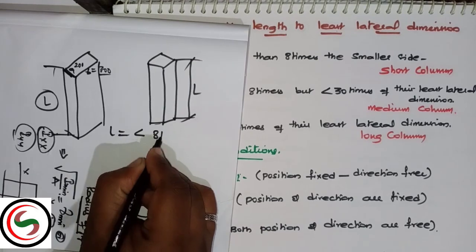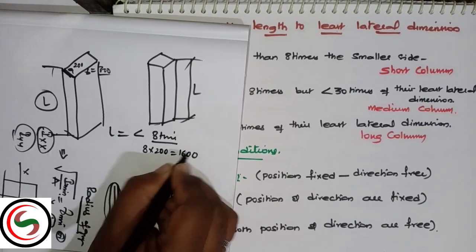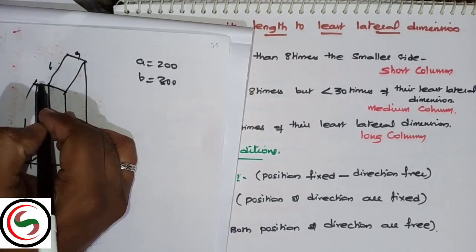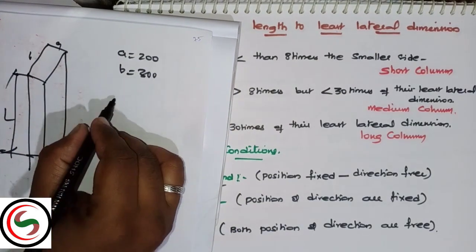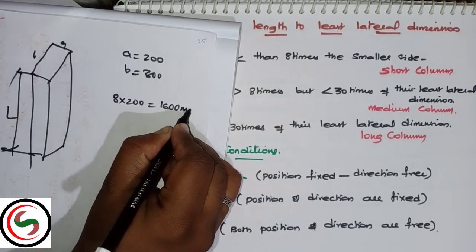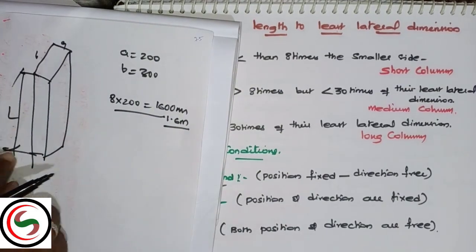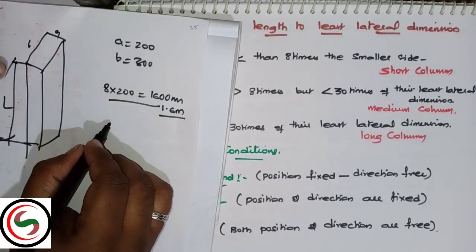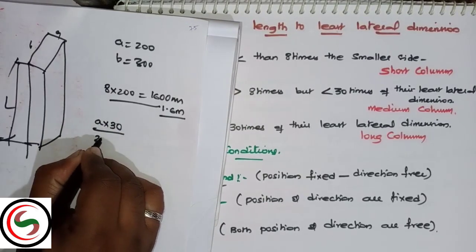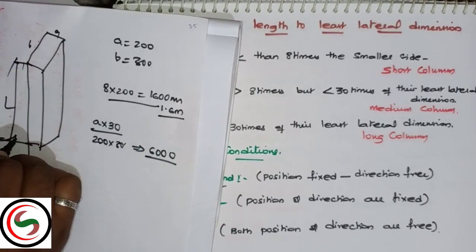Suppose the length is less than 8 times a. If a is 200, then 8 times 200 is 1600. If the length is less than 1.6 meters, we call it a short column.